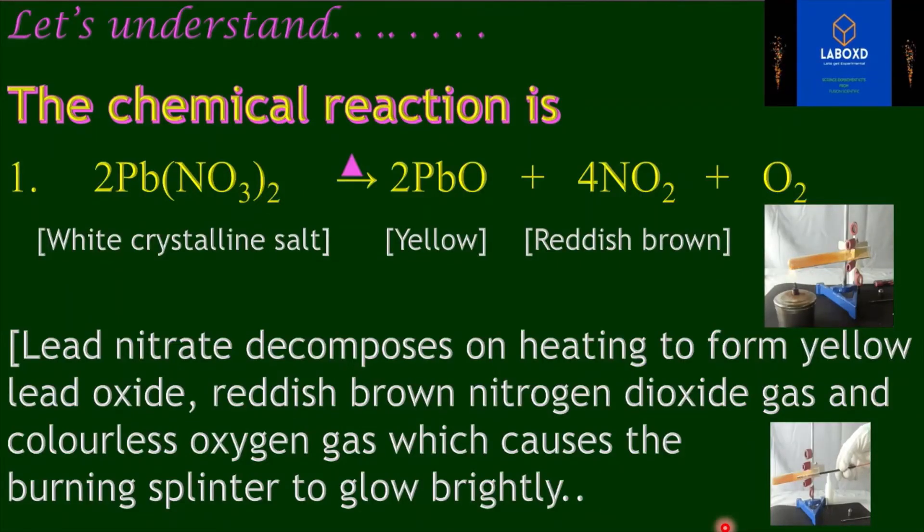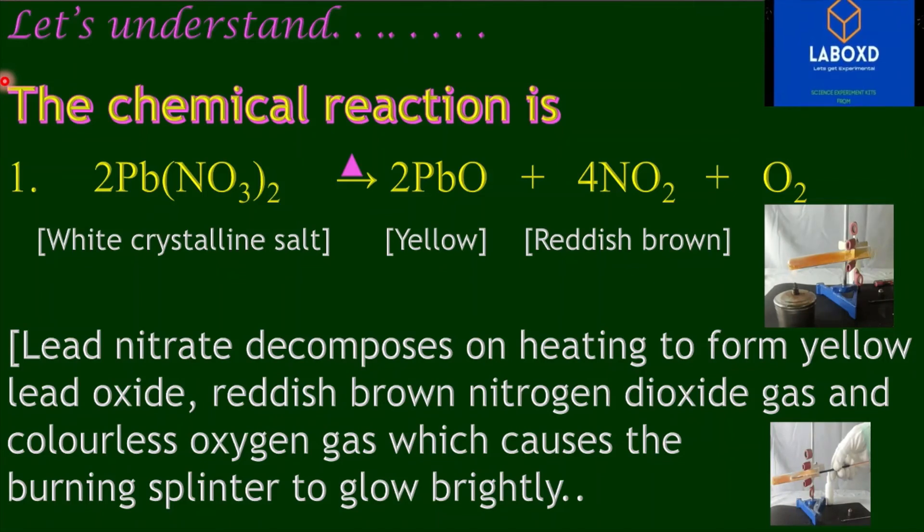Now, let us understand the chemical reaction taking place in this experiment. Lead nitrate decomposes into lead oxide, nitrogen dioxide, and oxygen. Lead nitrate decomposes on heating to form yellow lead oxide, reddish brown nitrogen dioxide gas, and colorless oxygen gas which causes the burning splinter to glow brightly.